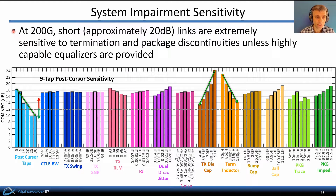Generally, at 200 Gbps, short links are extremely sensitive to termination and package discontinuities unless highly capable equalizers are provided.